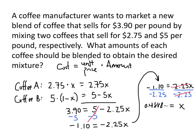That means our blend should have about 48.9% of coffee A. Subtracting that from 1, we get 51.1% of coffee B. That's how the blend should be constructed.